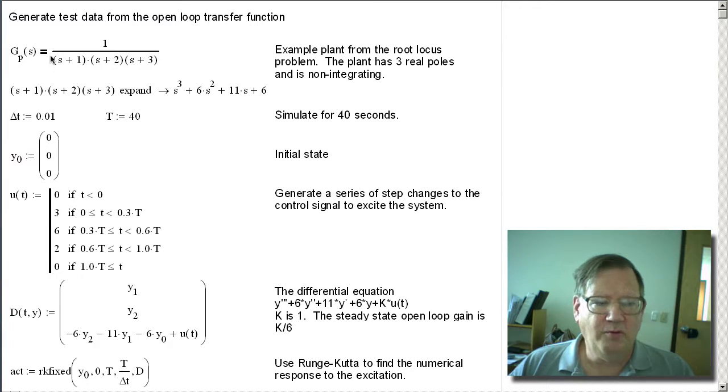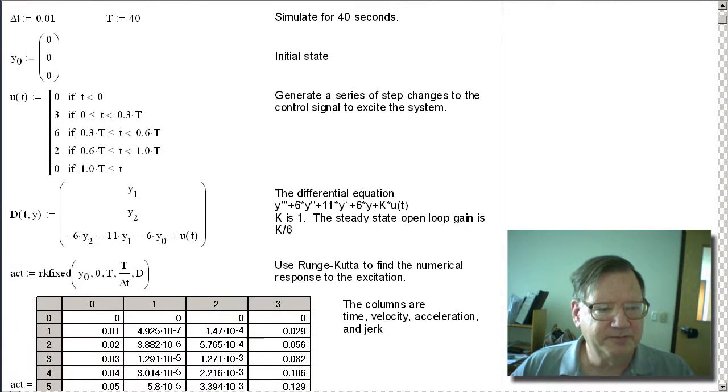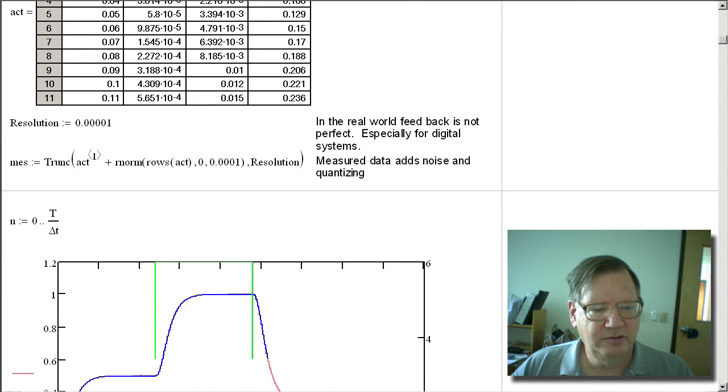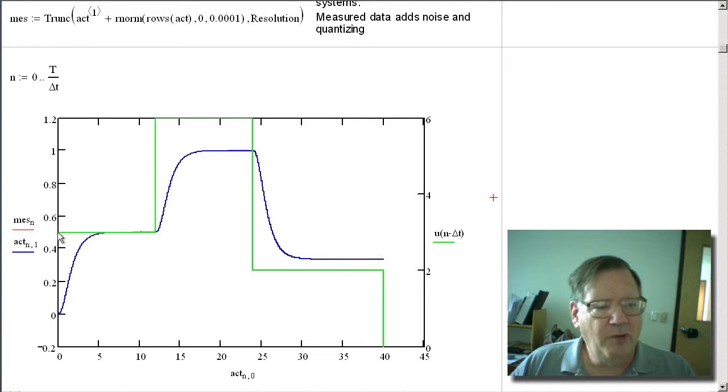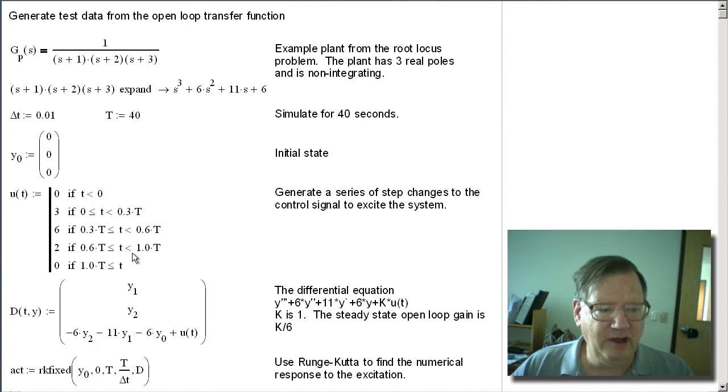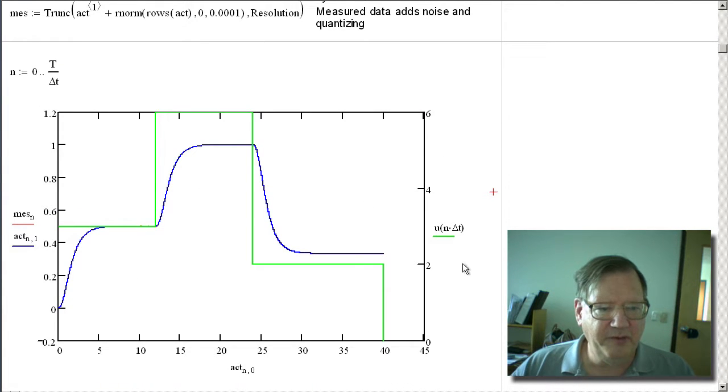We're going to start with the same transfer function as what was used for the root locus video. It's a simple three real pole system. And I'm going to solve it. I'm going to excite it with some step jumps here and get a response here. What's happening is that the positions are going from 0 to 1. The control signal is going from 0 to 6. And if you take a look at the transfer function, you can see that the gain is going to be 1 over 6. So you can see that this is simulating the system pretty well.